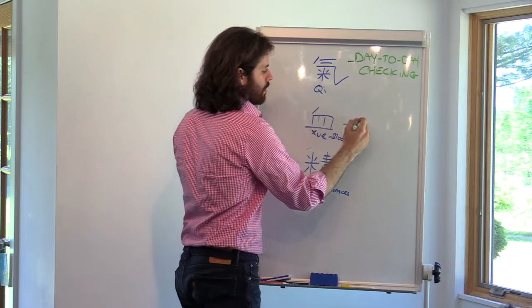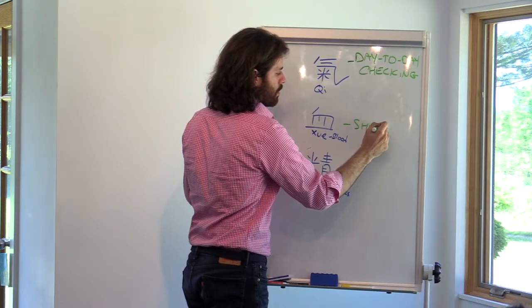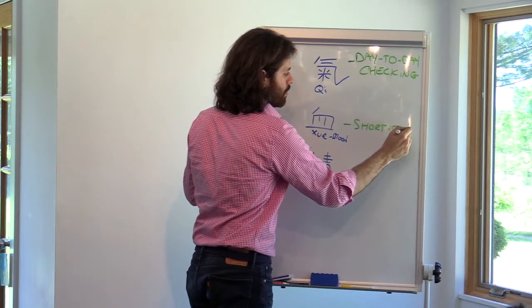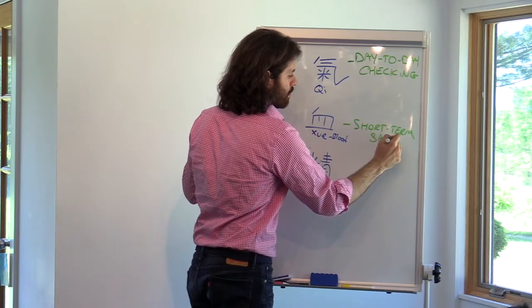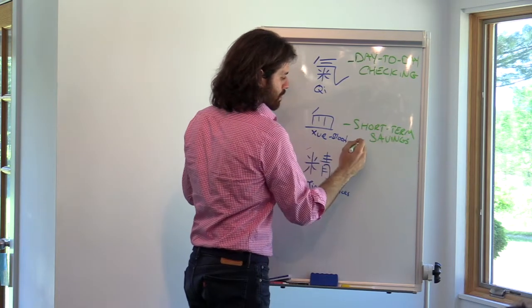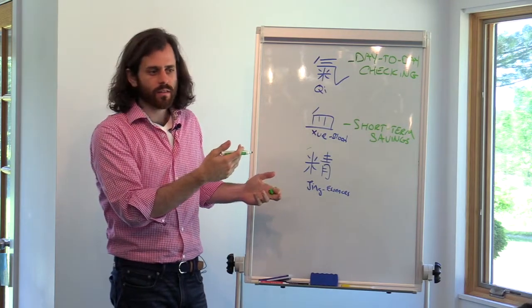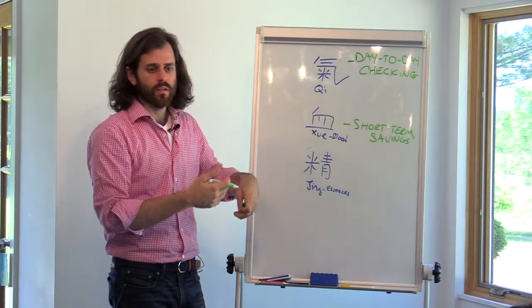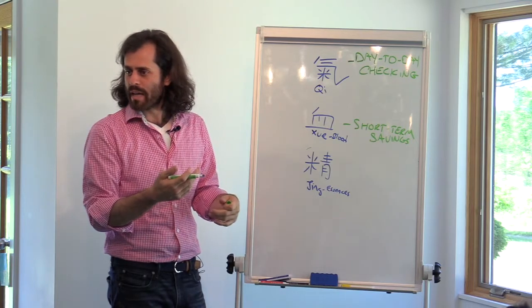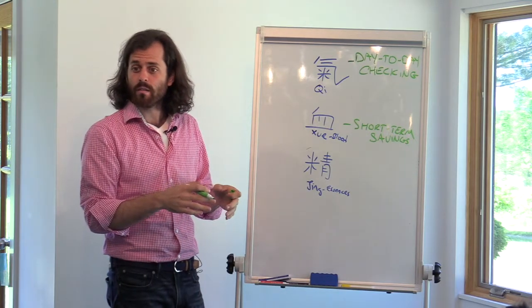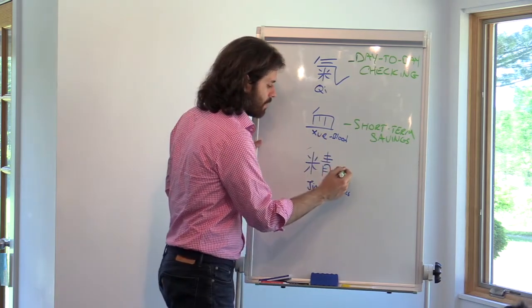We're going to call blood our short-term savings. So this is like, save for your property taxes, save for a vacation, you save for a big appliance, save for a rainy day fund. All the things you use for short-term savings.